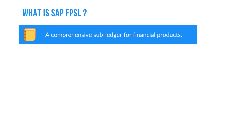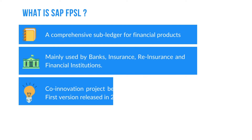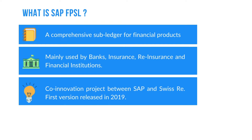What is SAP FPSL? It's a comprehensive subledger system to keep track of all financial transactions in any financial institution. This component is mainly used by banks, insurance, reinsurance, and other financial institutions. It's a co-innovation project between SAP and Swiss Re.